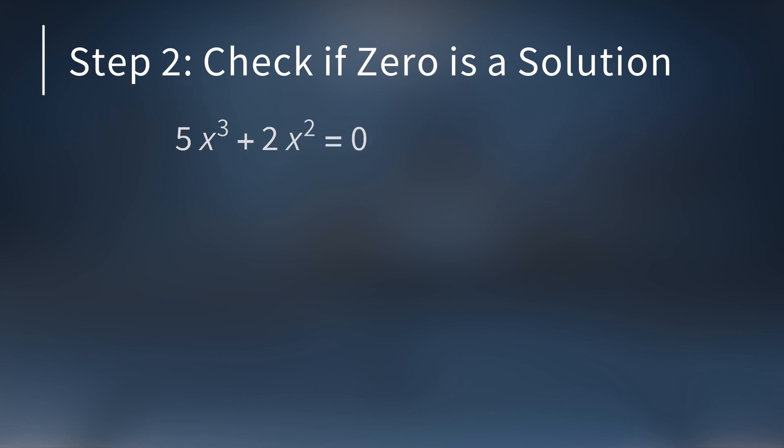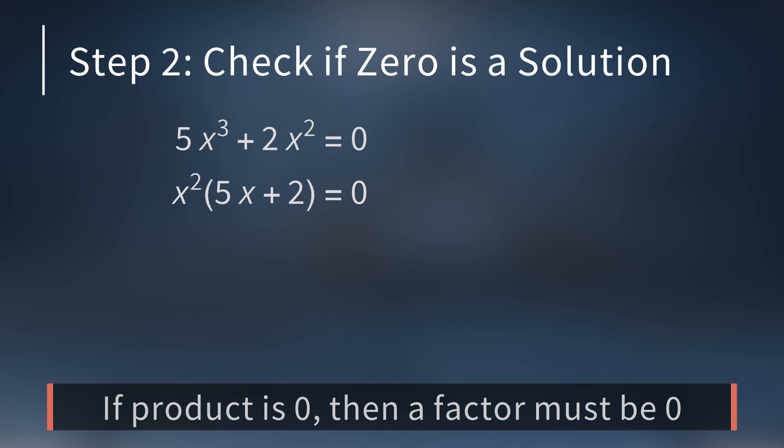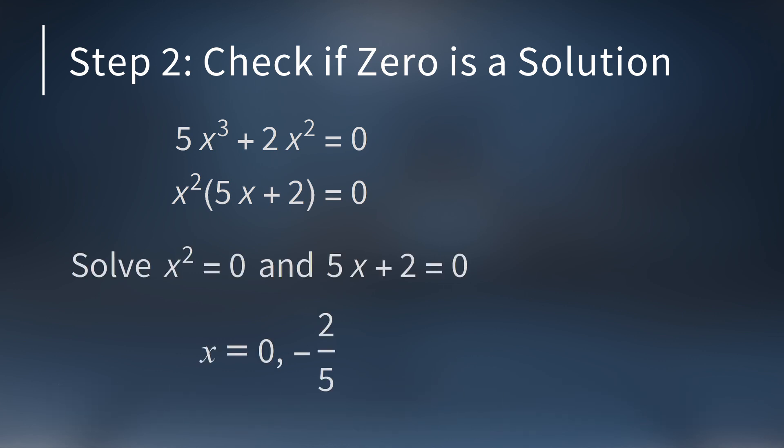Once our equation is in standard form, we'll check to see if 0 is a solution to the equation. For example, look at the equation 5x³ + 2x² = 0. On the left-hand side, we can factor out x². This gives us x² times the quantity 5x + 2 = 0. And a key principle in solving equations is that if a product of factors is 0, then one of the factors has to be 0. This is because if you multiply a bunch of numbers together, the only way their product is 0 is if one of the numbers is 0.